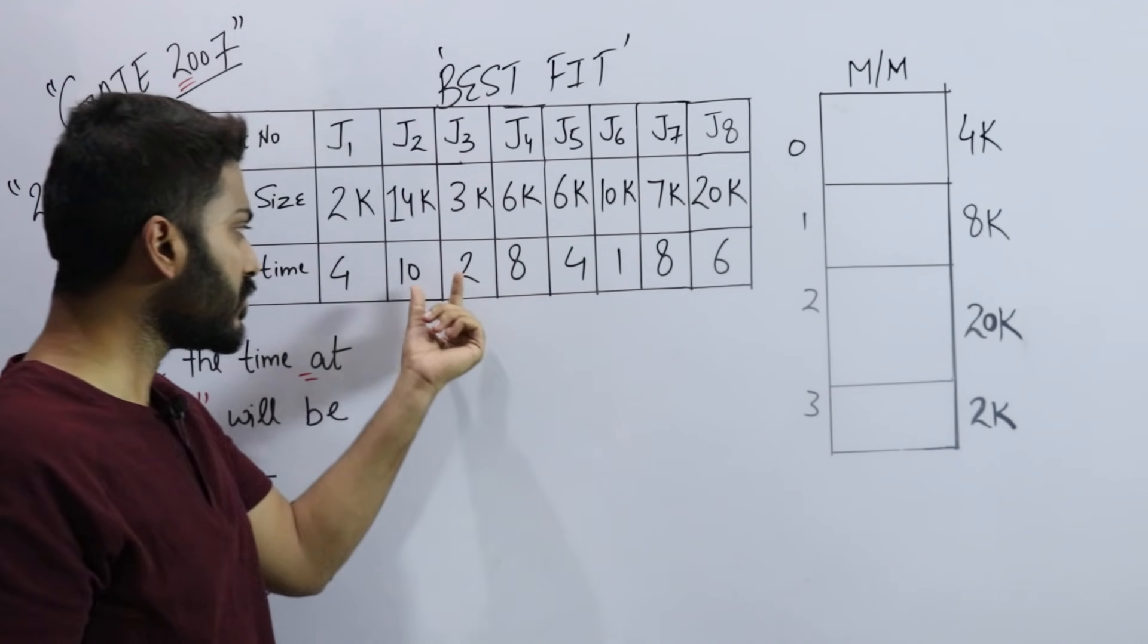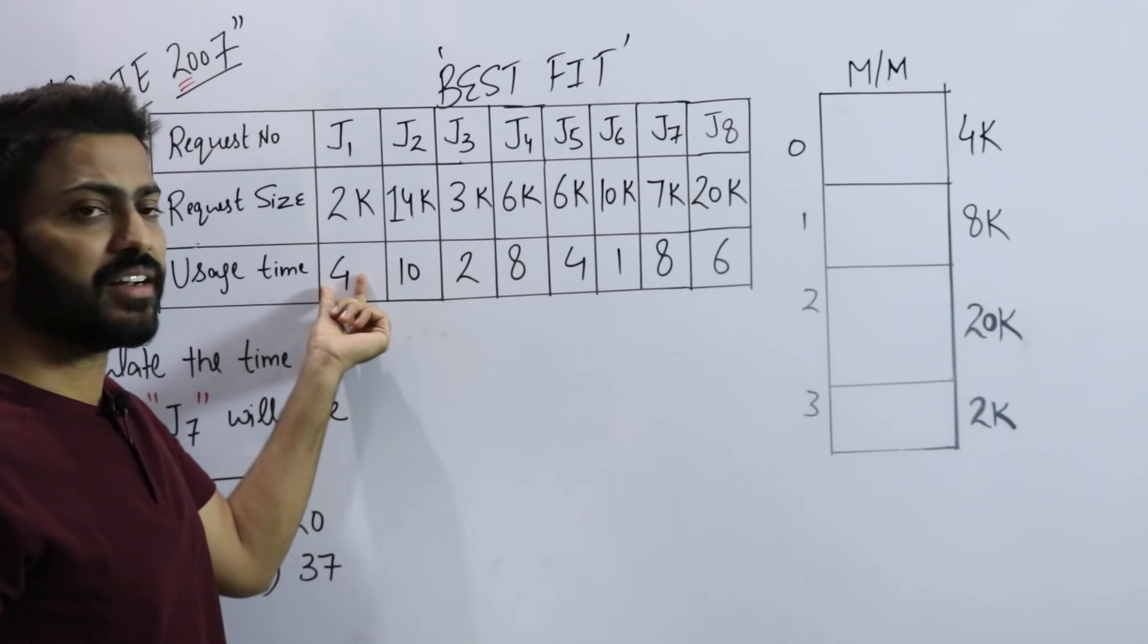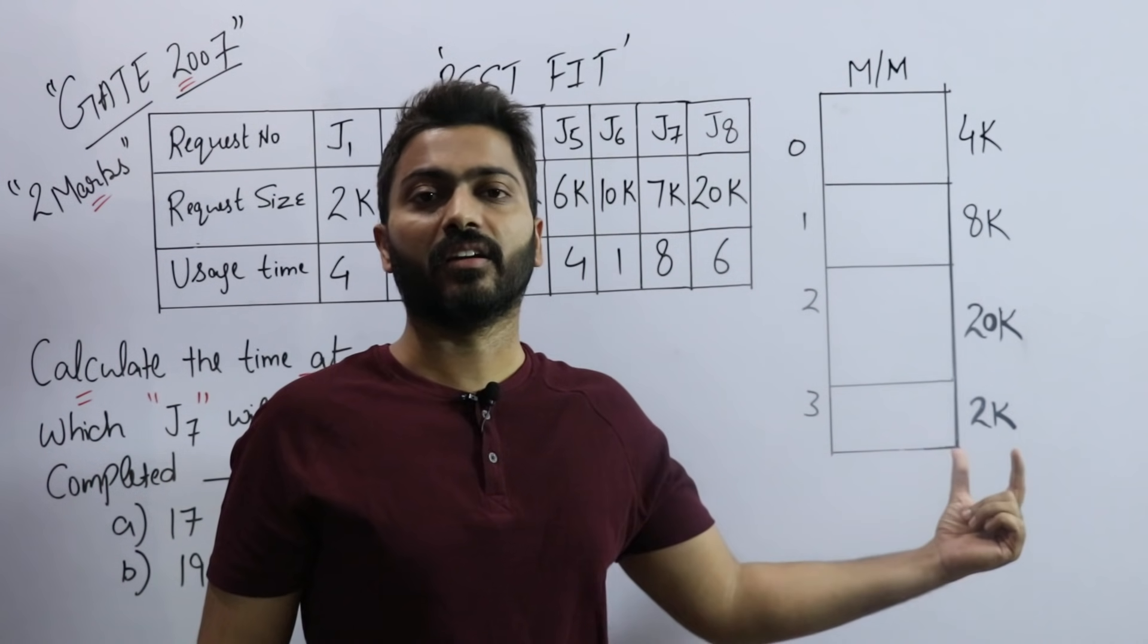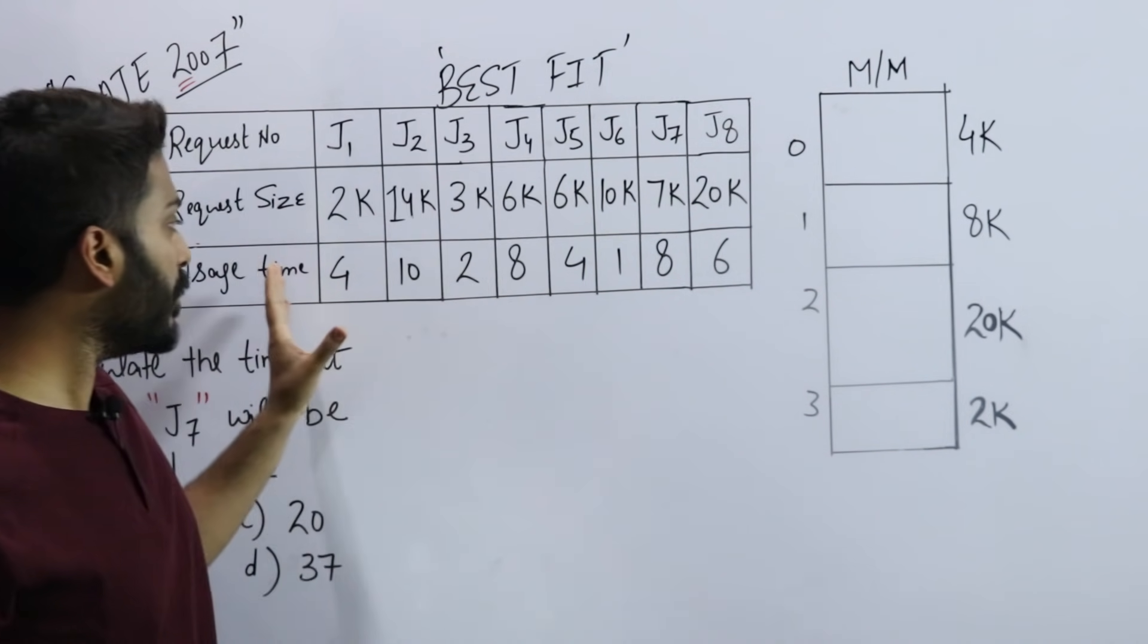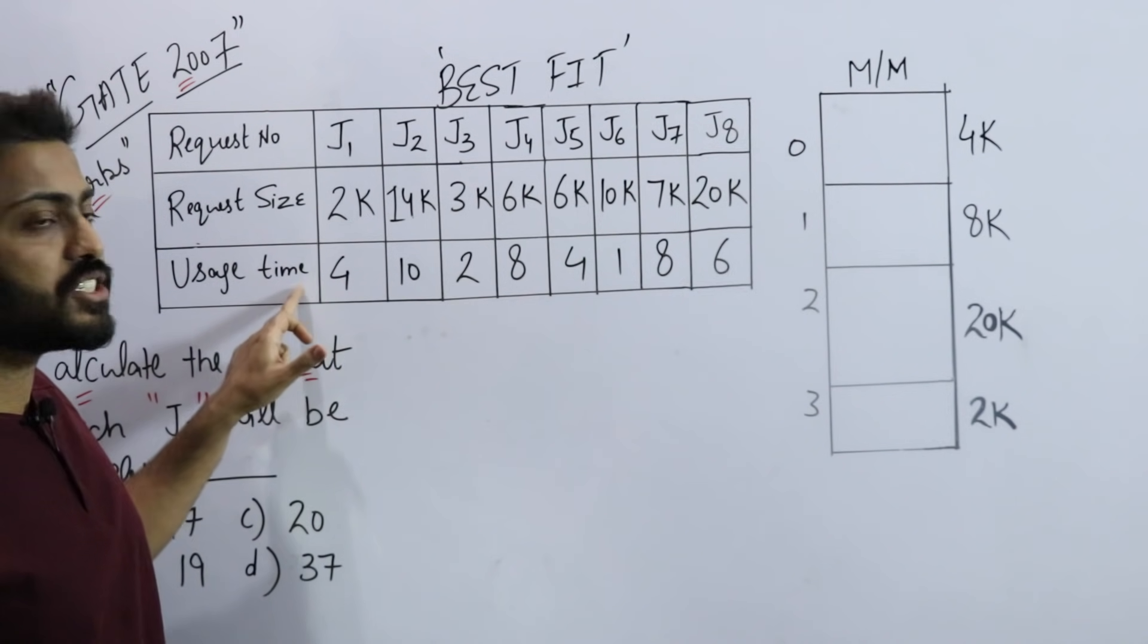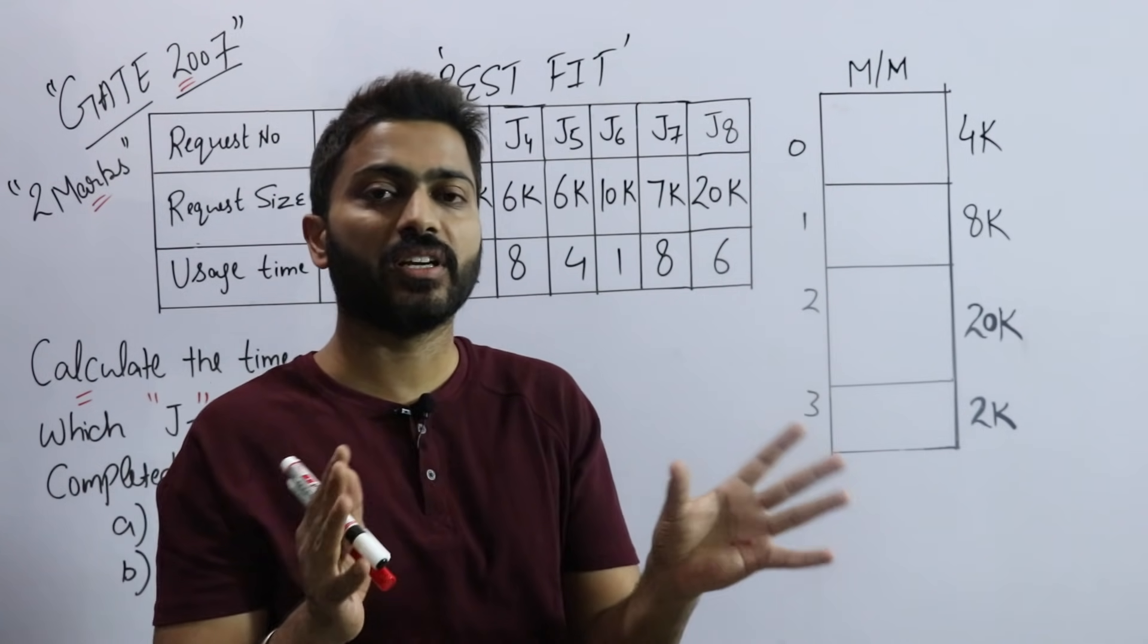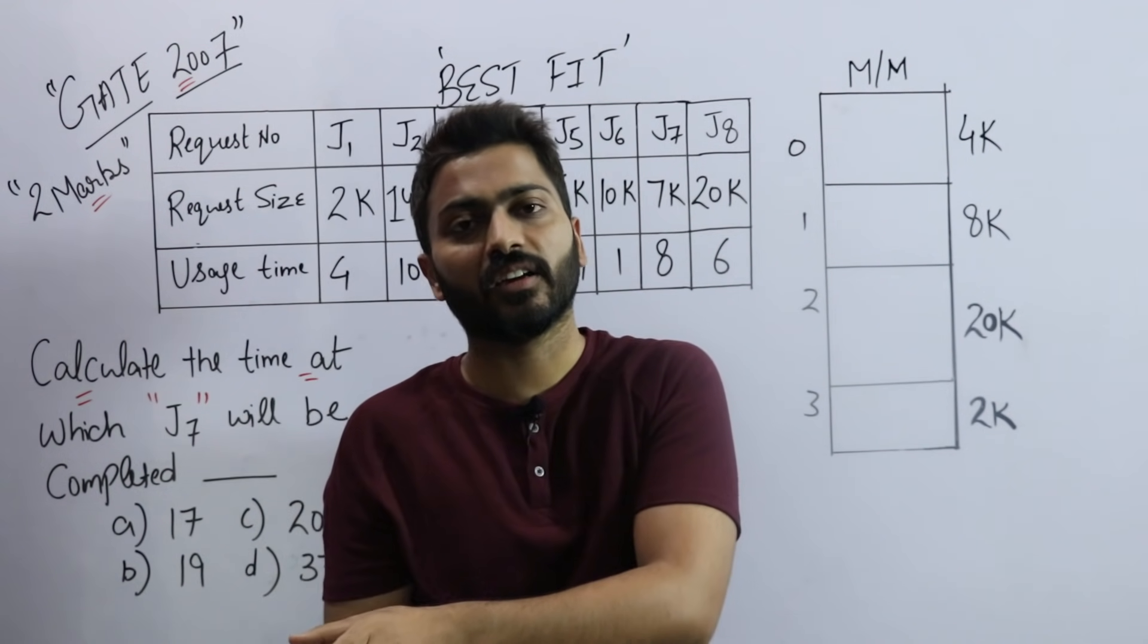It is not mentioned in the question whether it is seconds, milliseconds, or nanoseconds, so you can take it as seconds. So for four seconds, it will occupy its space in memory. We have already solved many questions on best fit, first fit, and worst fit.